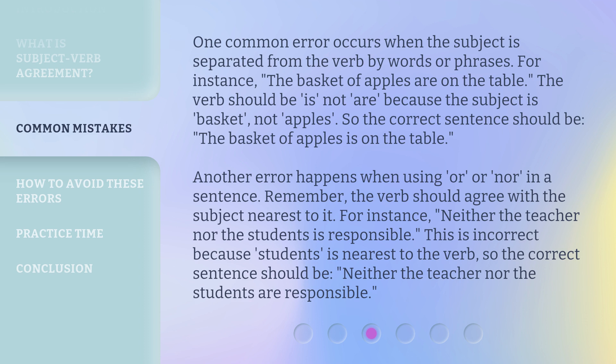Another error happens when using 'or' or 'nor' in a sentence. Remember, the verb should agree with the subject nearest to it. For instance, 'Neither the teacher nor the students is responsible' is incorrect because 'students' is nearest to the verb. So the correct sentence should be: 'Neither the teacher nor the students are responsible.'